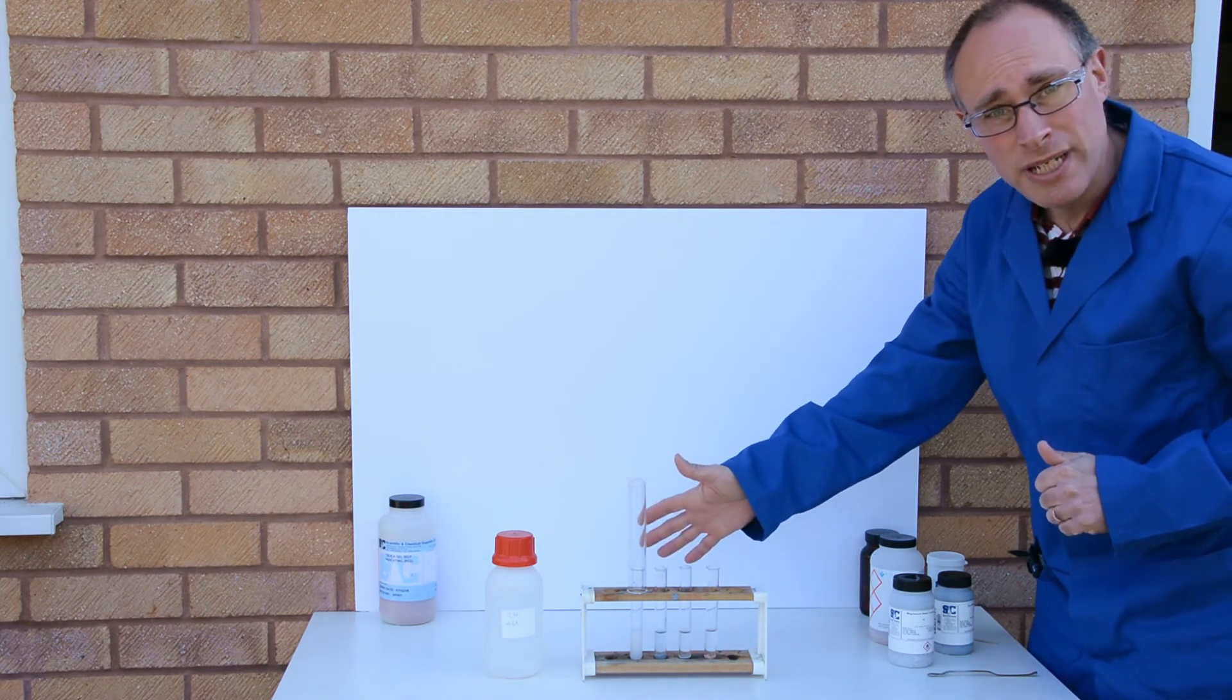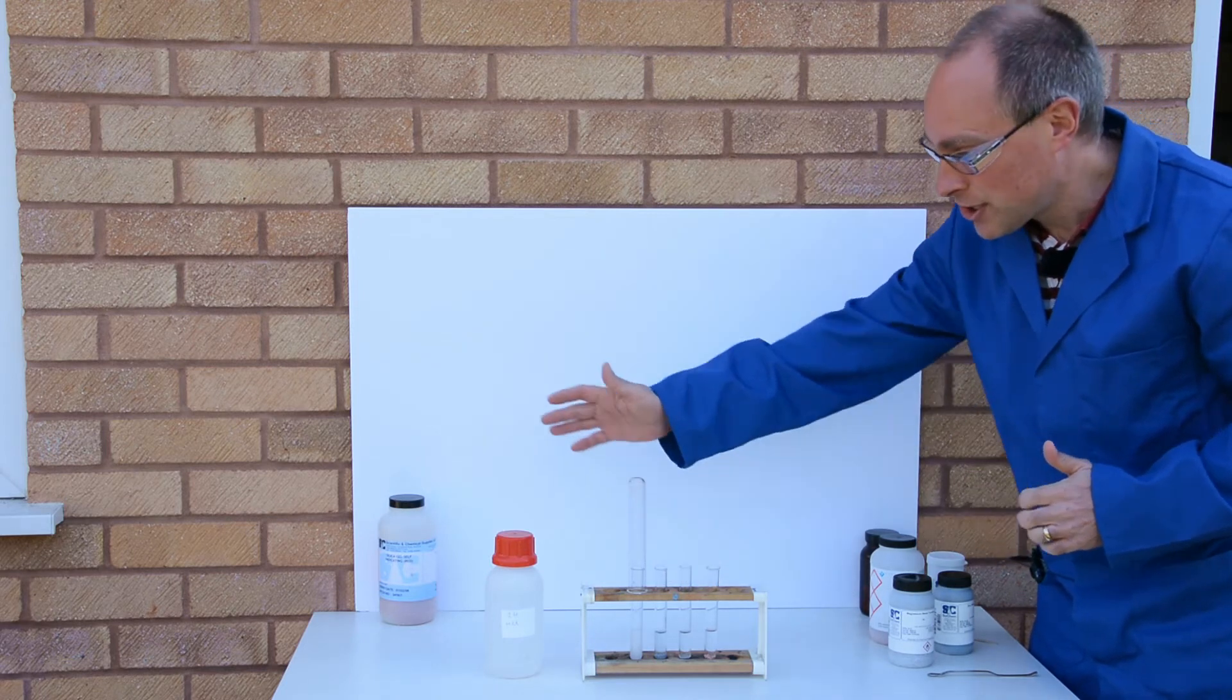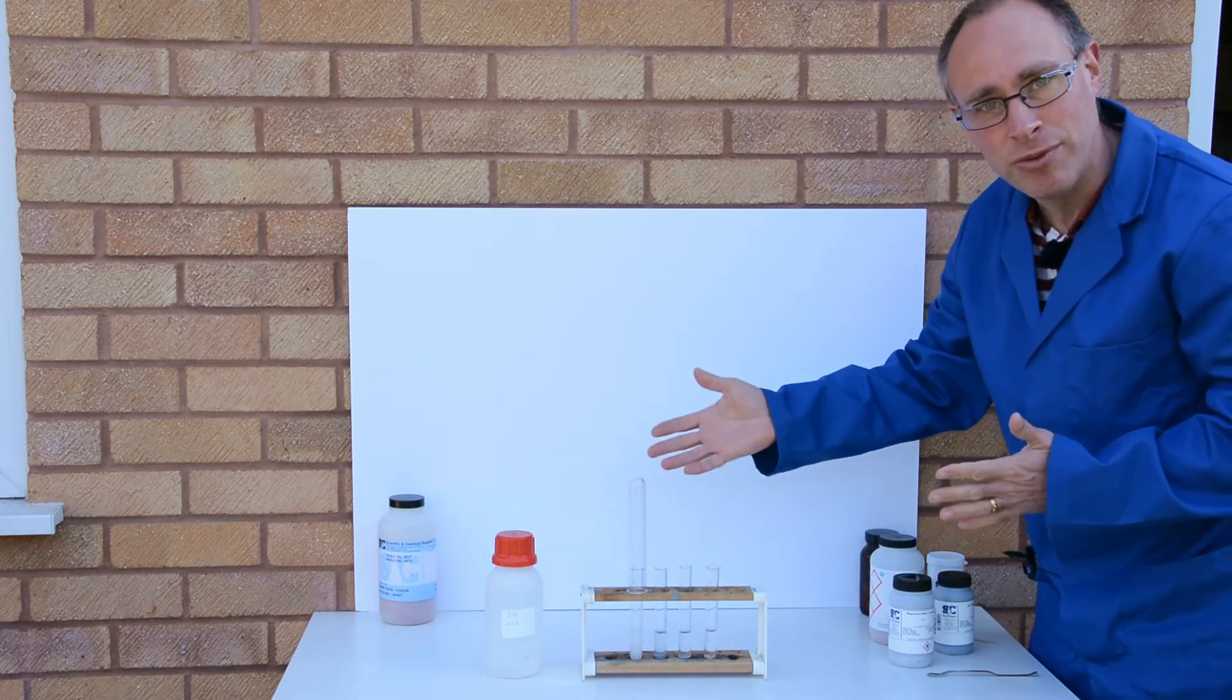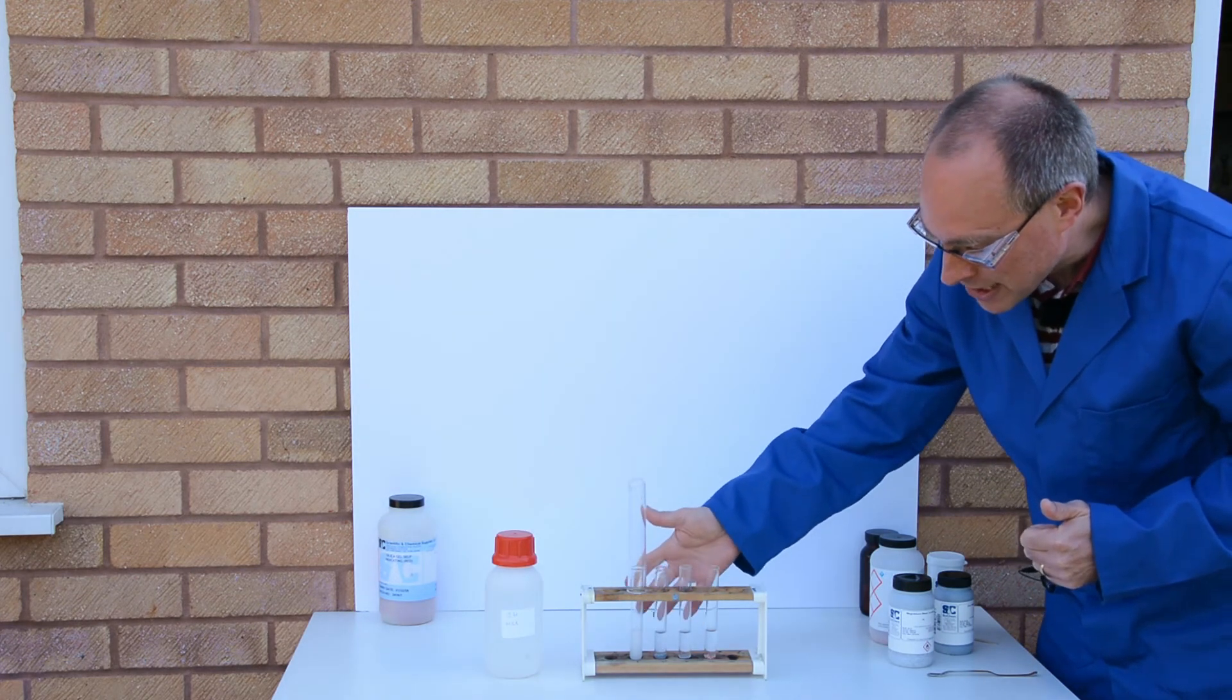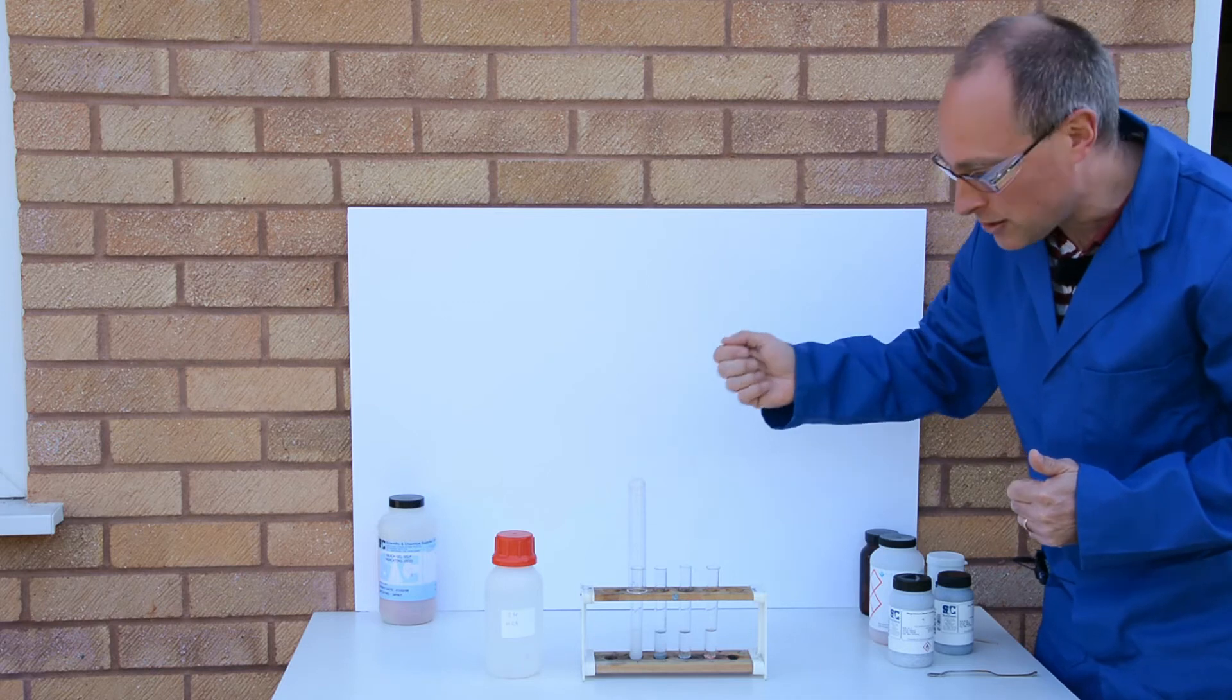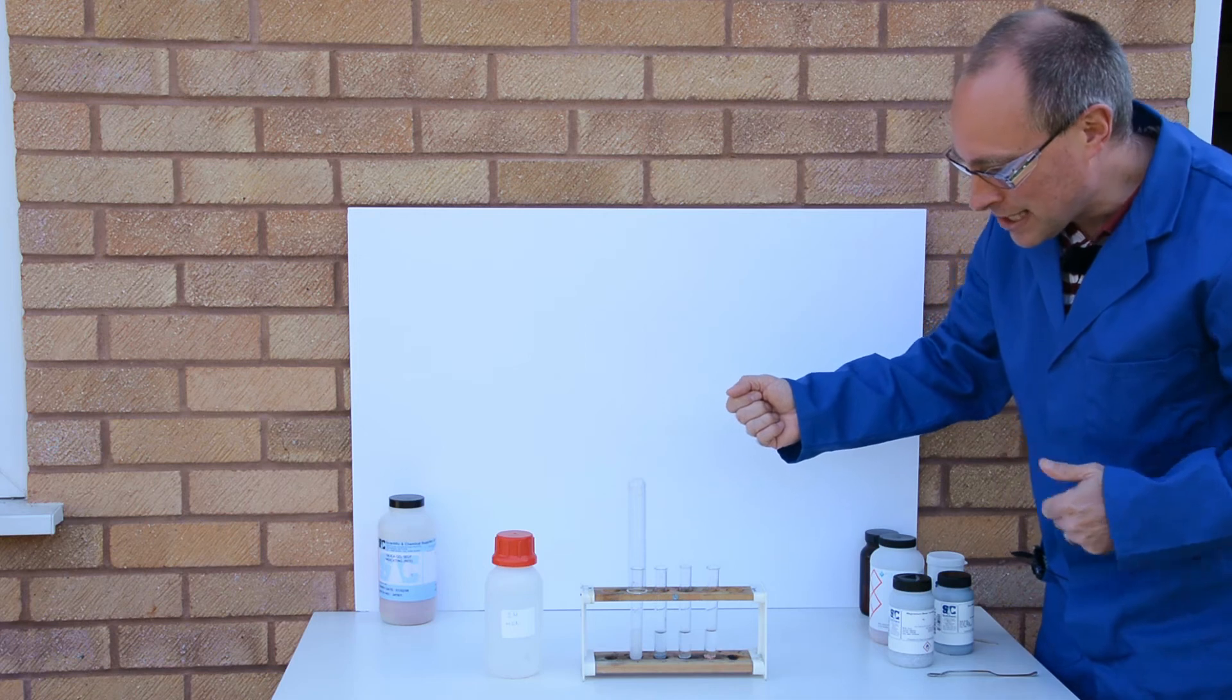So the chemical reaction between a metal and acid produces a salt - so if we're using hydrochloric acid we'll produce the chloride salt - and we can obviously see that a gas is being produced as well. So quite rapid effervescence with the magnesium.